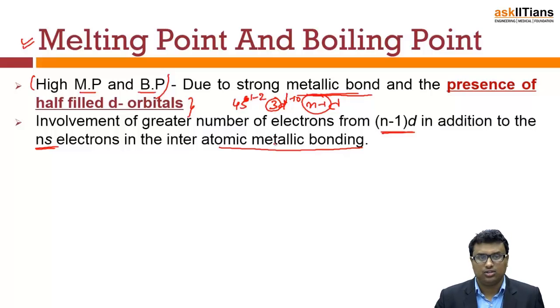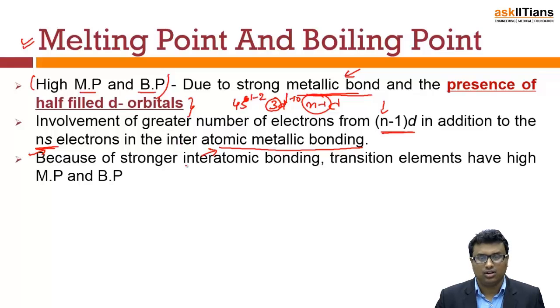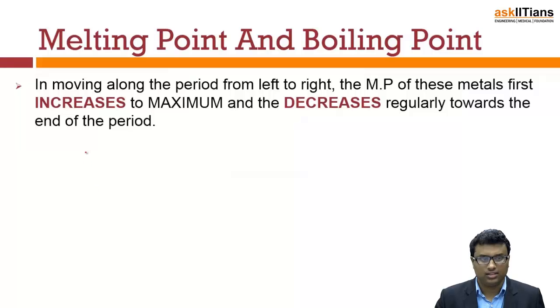As soon as you involve this greater number of electrons from (n-1)d in addition to ns electrons, metallic bonding becomes possible. If metallic bonding is possible, as I already told you, you have high melting point and boiling point. Because of strong inter-atomic bonding, transitional elements have higher melting and boiling point. So the same logic applies next.